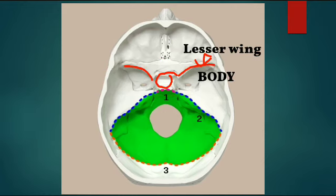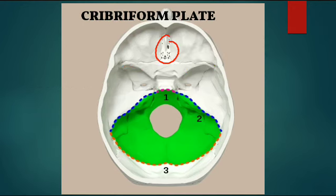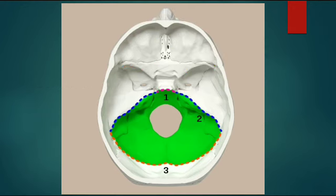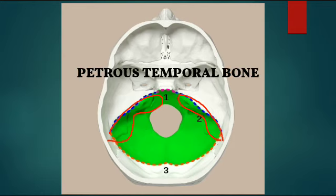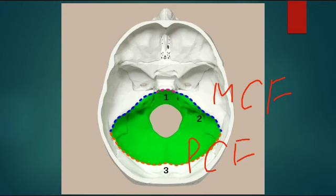This is your cribriform plate. This bone shown in green is your petrous temporal bone - this is the bone which divides the middle and the posterior cranial fossa.